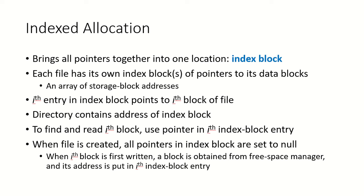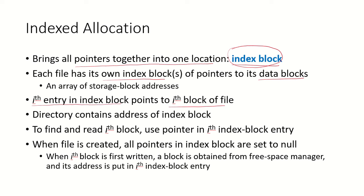In indexed allocation, all the pointers are brought together into one location known as the index block. A file is allocated many disk blocks, and all the pointers to those blocks are put in one block referred to as the index block. Each file has its own index block of pointers to its data blocks. The ith entry of the index block will point to the ith block of the file, and the directory will contain the address of the index block.